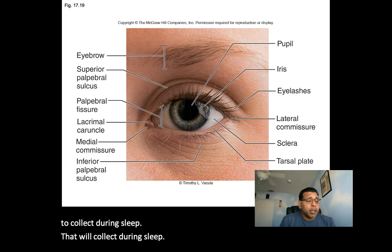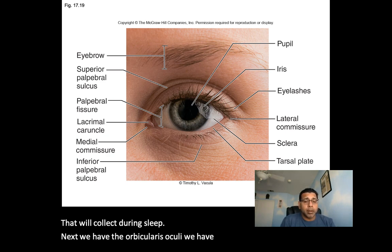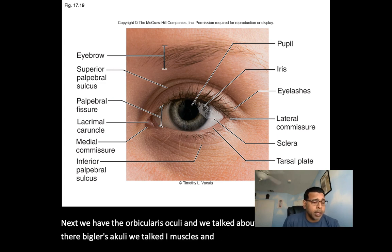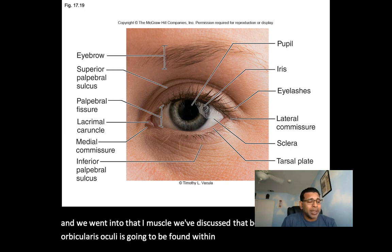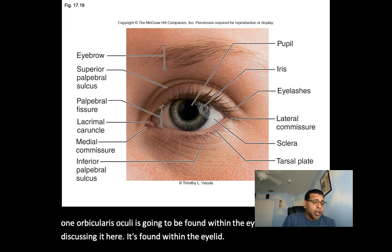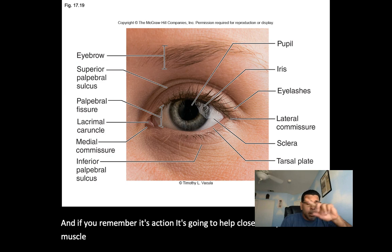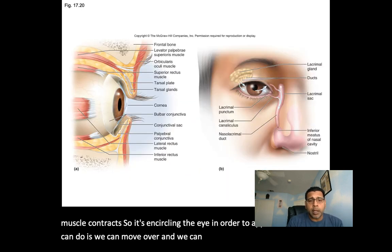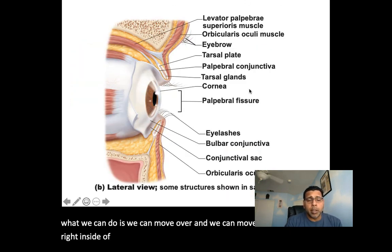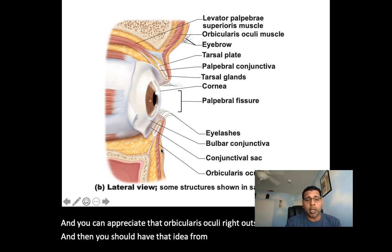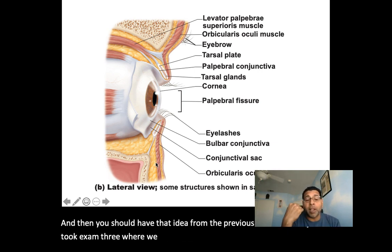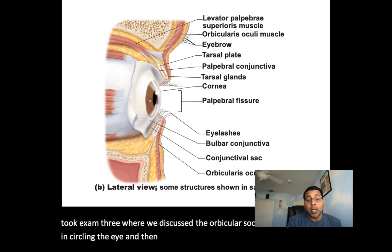Next, the orbicularis oculi is found within the eyelid, encircling the eye. When this muscle contracts, its action is to close and protect the eye. We discussed the orbicularis oculi before in the context of eye muscles, where it was found encircling the eye and its action was to close the eye.